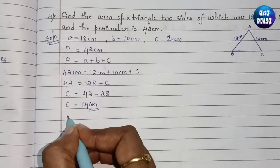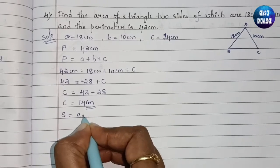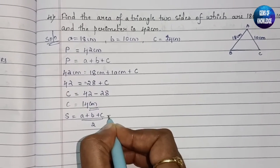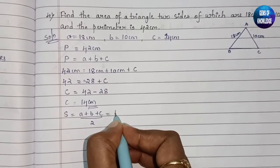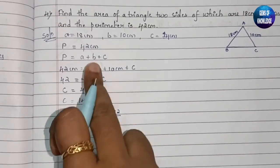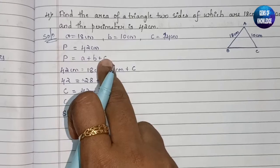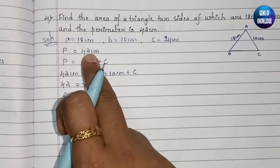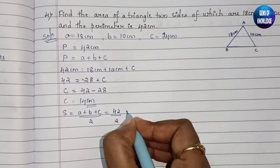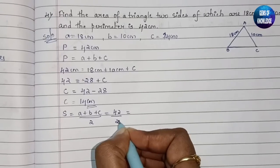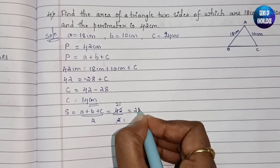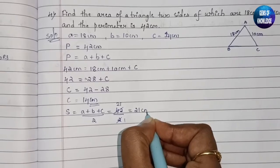Now we need to find s. s equals (a plus b plus c) divided by 2. We already know a plus b plus c equals 42, which is the perimeter. So s equals 42 divided by 2, which is 21 centimeter.